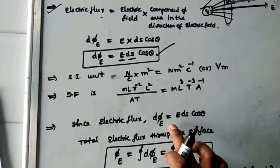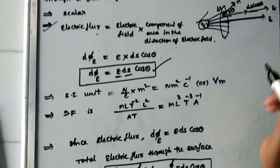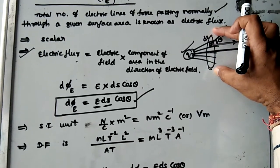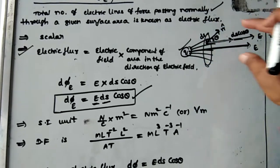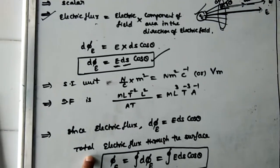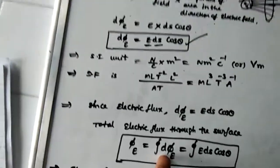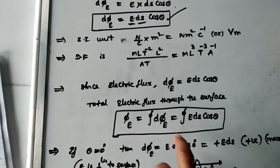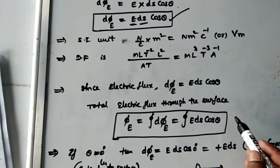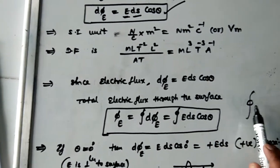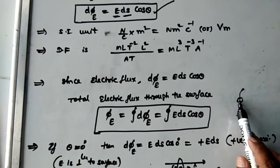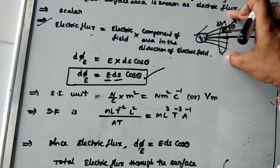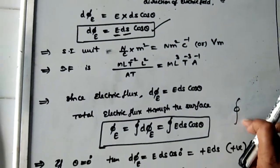Small electric flux is E ds cos theta. Through a small surface area you get a small number of lines of force. To find the total electric flux through the entire surface, we add all small fluxes by integration: total electric flux phi E = ∮ d phi E = ∮ E ds cos theta. The symbol ∮ means integration over a closed surface. This surface must be closed — if it is open, your flux will be zero.